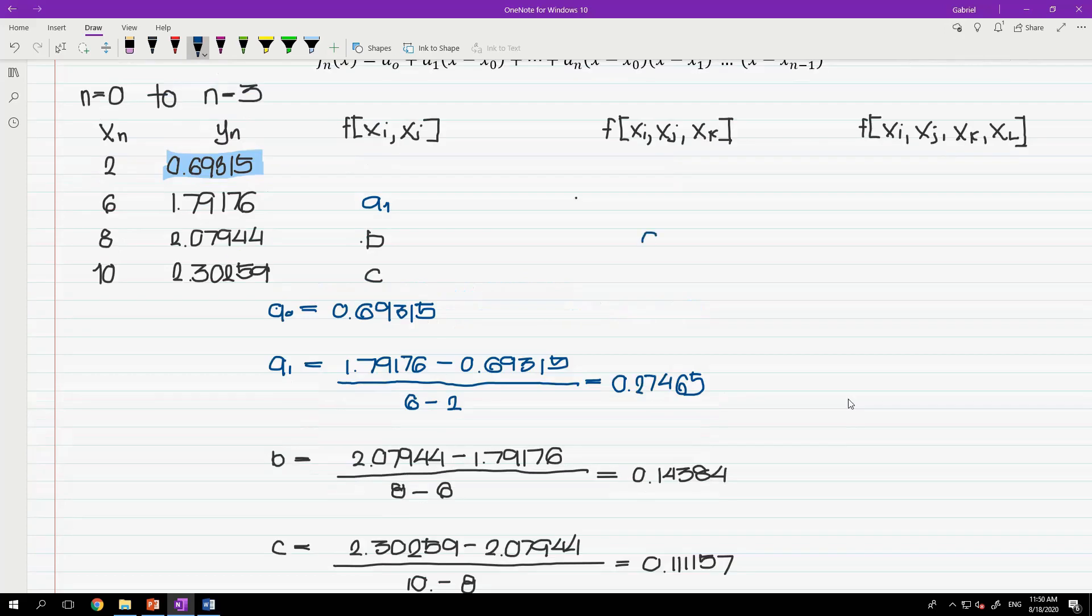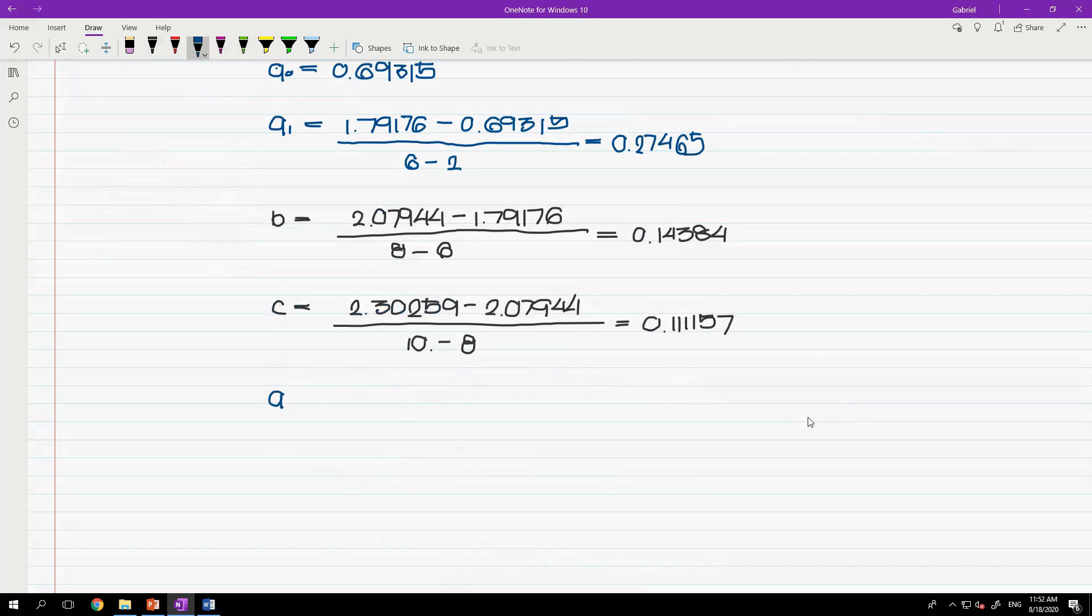For the third coefficient, it is equals to the difference of these terms divided by the difference of these terms. So a sub 2 is equals to 0.14384 minus 0.27465 all over 8 minus 2. And that is equals to negative 0.02180.